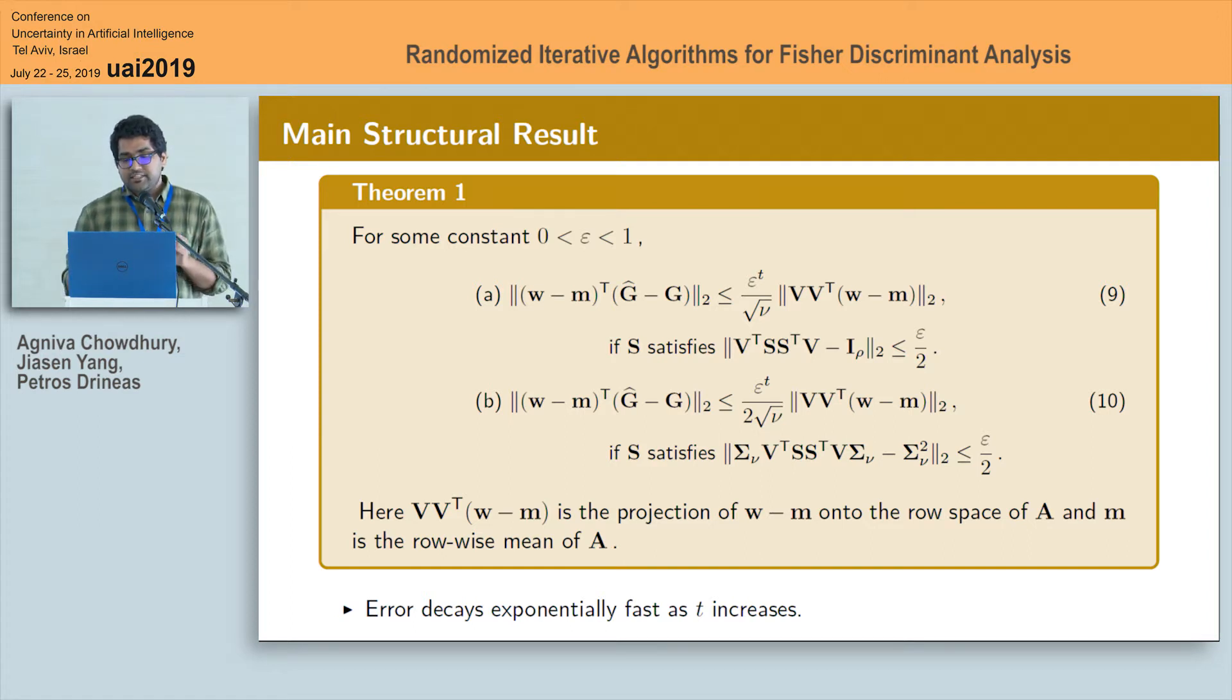In fact, right-hand side of both of these bounds in equation 9 and 10 actually depends on the part of the data point W that lies on the row space of A. Now there is a common aspect between both part A and part B of our result which is under both these structural conditions our algorithm actually converges exponentially fast as the number of iterations t increases. This is indeed a very important aspect of our result.